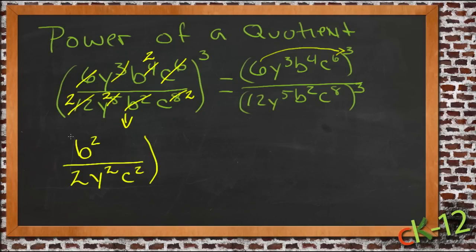We still need to cube our quotient. But now we have much smaller numbers to cube. We have b squared cubed. So raising a power to a power, we multiply. That gives us b to the 6th. And then we have 2 cubed. That's 8. Much easier than 196. And y squared cubed would be y to the 6th. And c squared cubed would be c to the 6th.